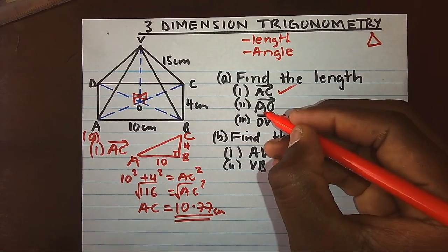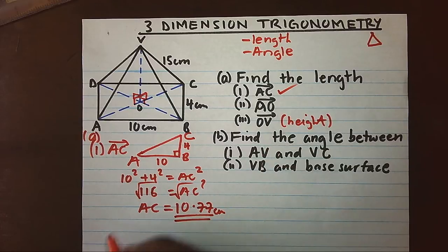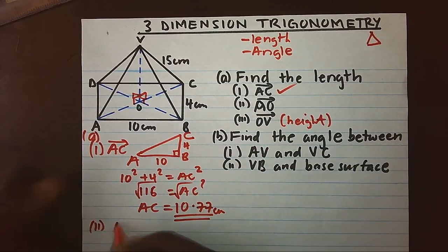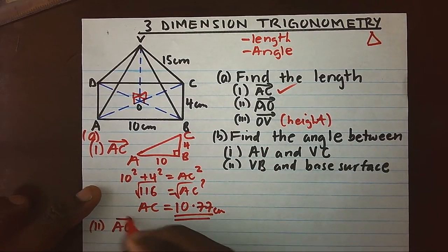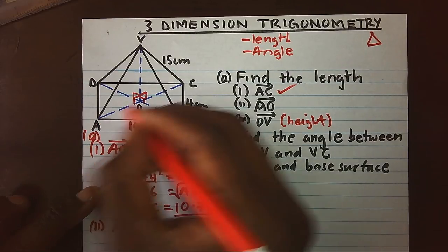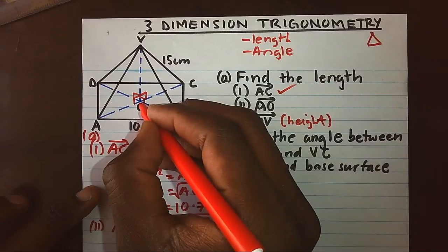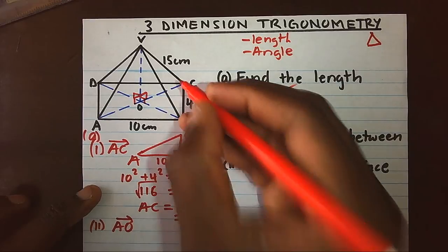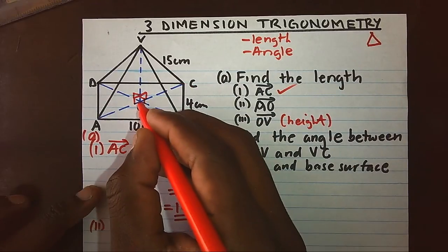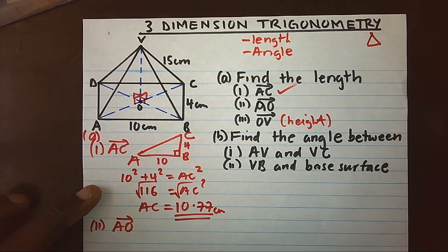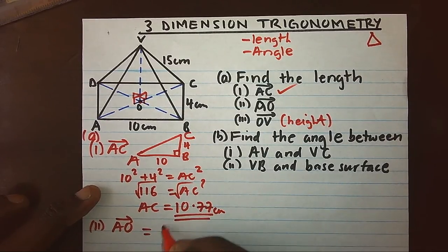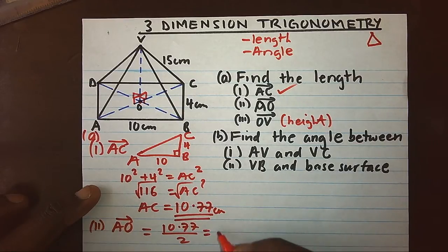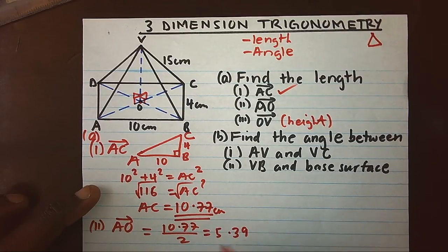Then, I will find length AO. When we look at length AO, we will clearly see that AO is a portion of AC. What portion can we clearly see? From the center, it means our AO is half. So, I will take 10.77, I will divide by 2 to get 5.39 centimeters.